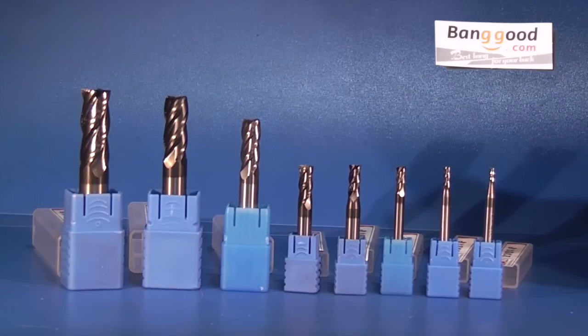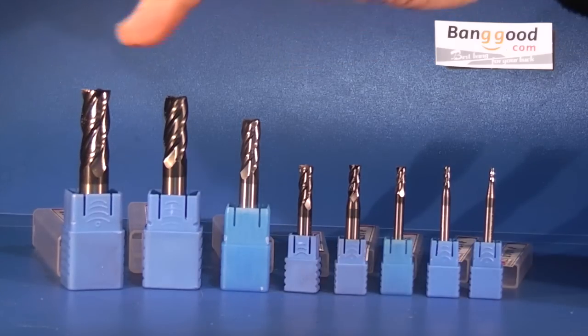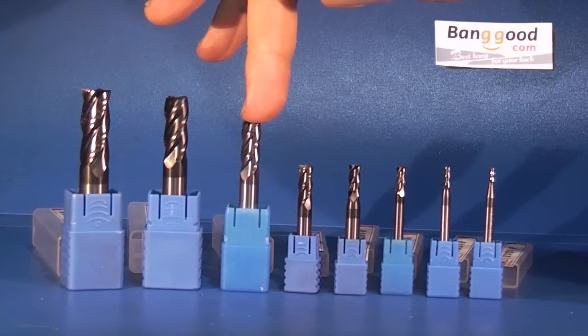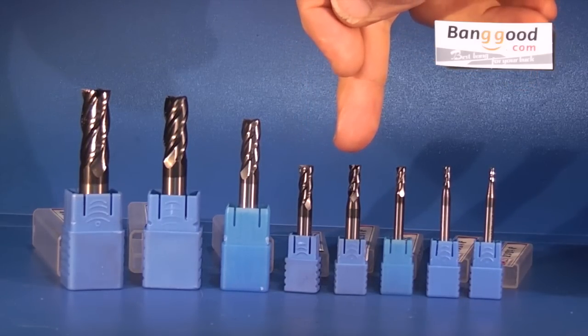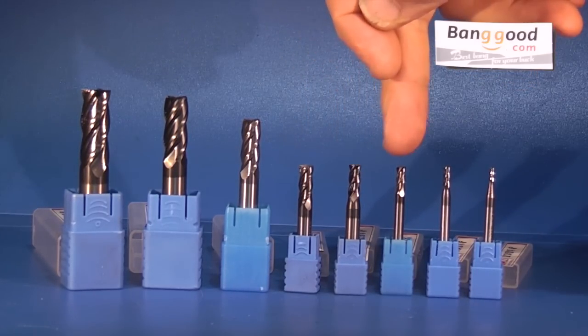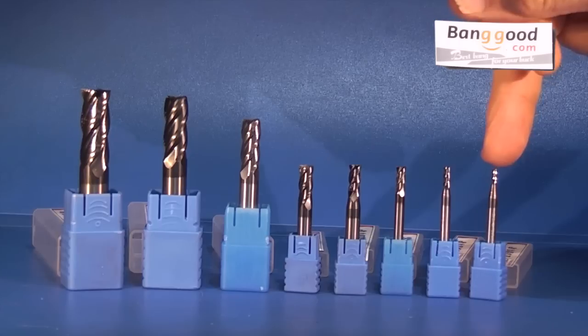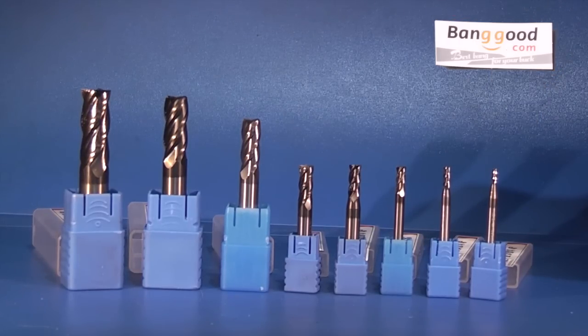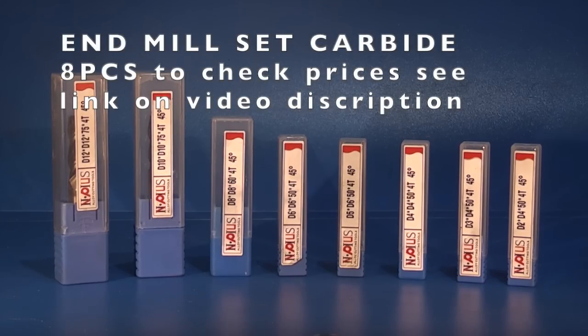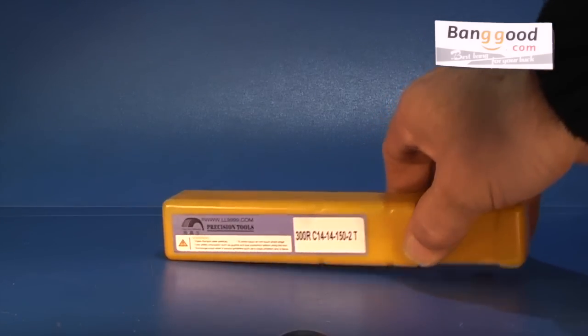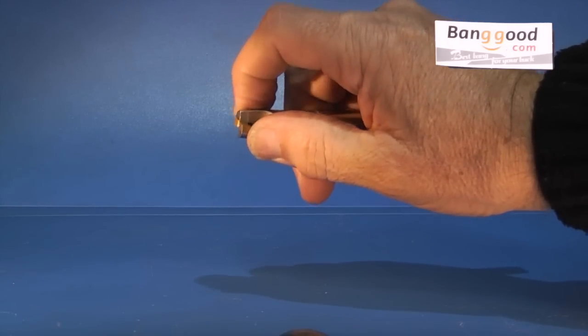I just want to show you this set of end mills, they're carbide end mills. This one starts at 12mm, this is a 10mm, an 8mm, a 6mm, a 5mm, a 4mm, a 3mm and the small one is a 2mm. And I'll put the link at the beginning of the video. I also had this end mill, 150 long, quite a long end mill.